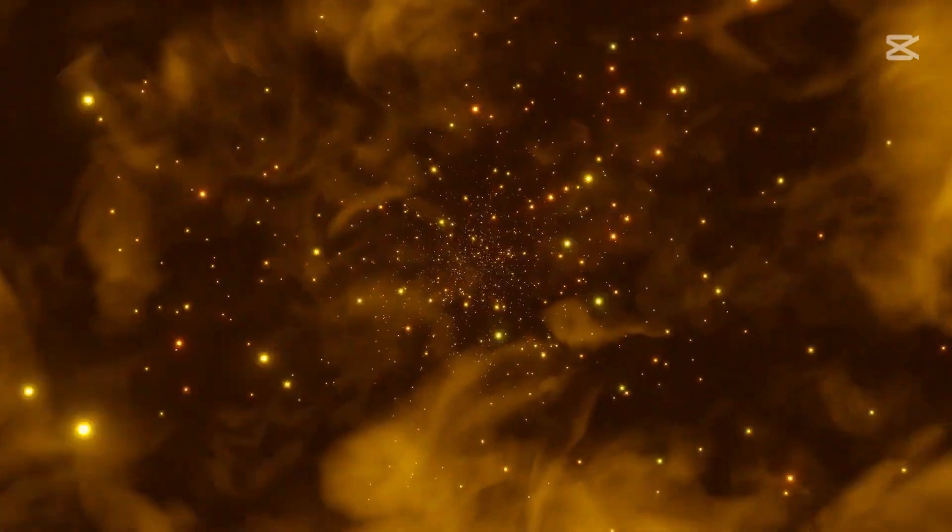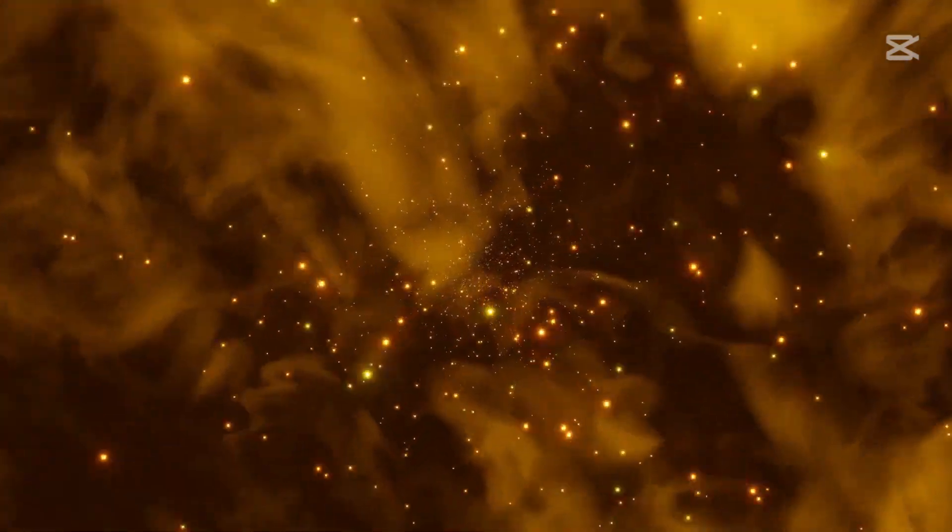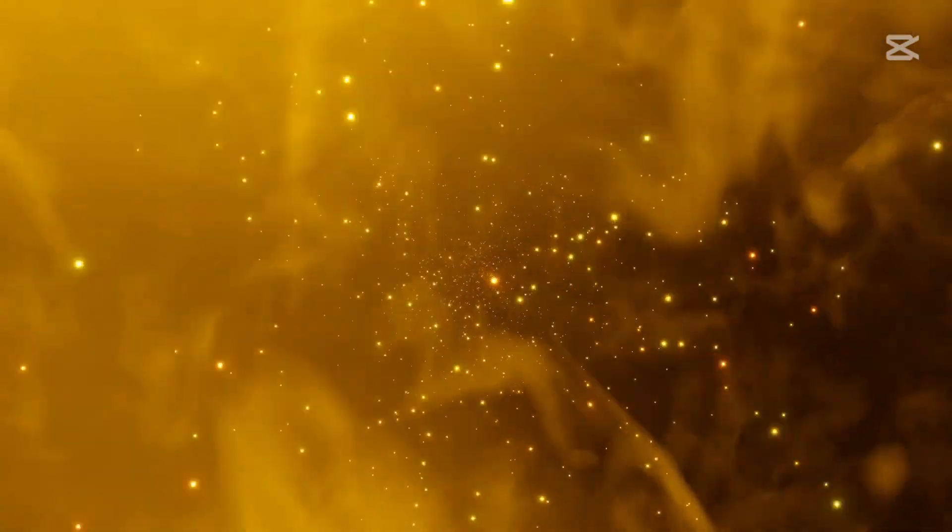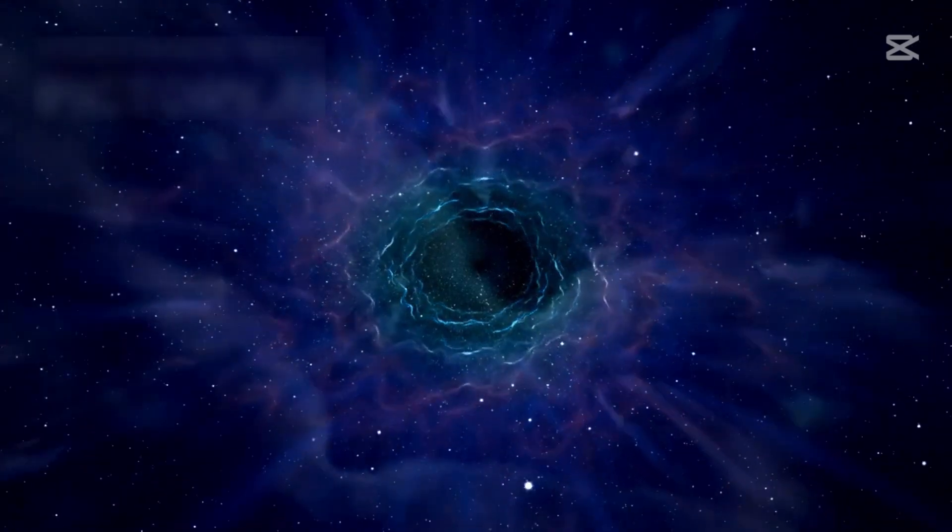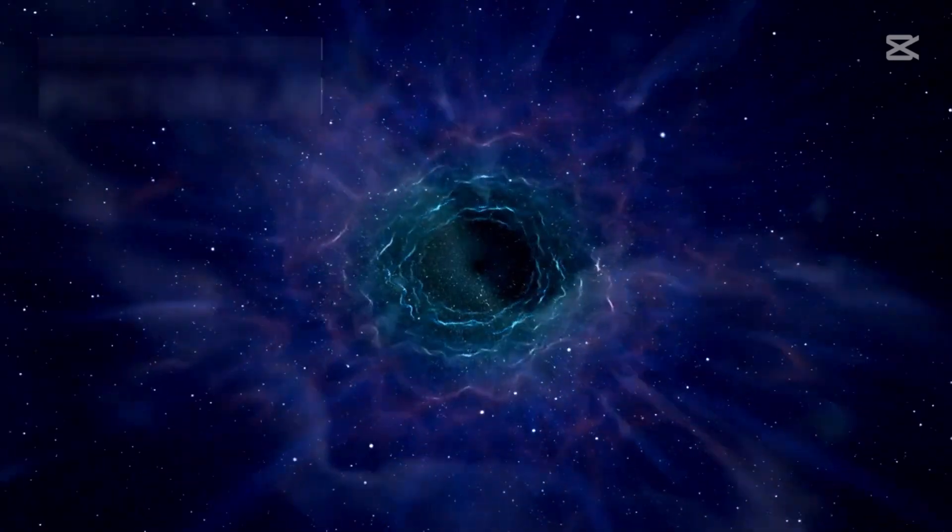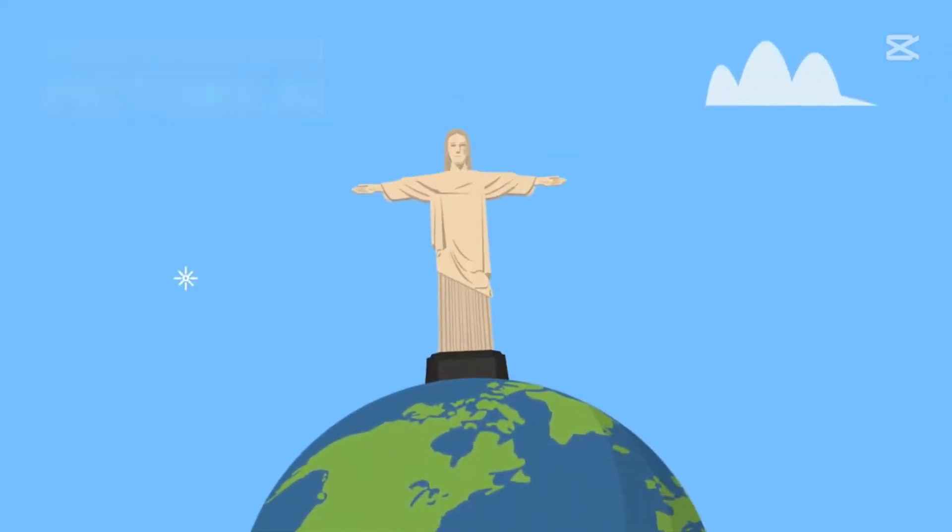Even light, which can travel around Earth seven times in just one second, seems relatively sluggish when compared to the massive expanse of our solar system. Despite the vastness of our solar system, it pales in comparison to the enormous size of the Milky Way galaxy. The Milky Way is home to roughly 300 billion stars, many of which likely have their own planetary systems.